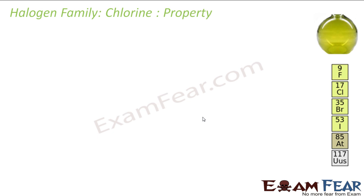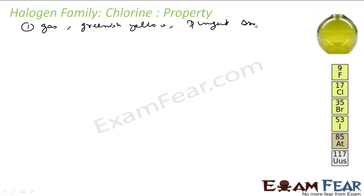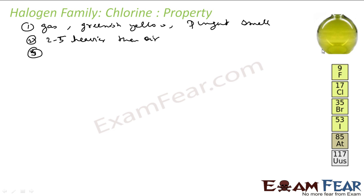Some properties of chlorine gas: it is a greenish yellow color gas with a very pungent, suffocating smell. It is 2 to 5 times heavier than air, so it settles down. It can easily be liquefied to a greenish yellow liquid because it boils at 239 Kelvin, and it can be liquefied at low temperature and high pressure.